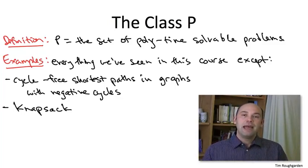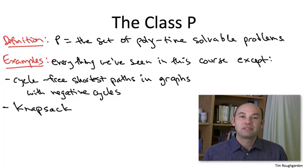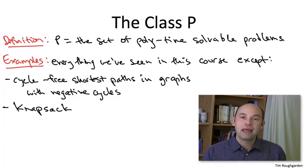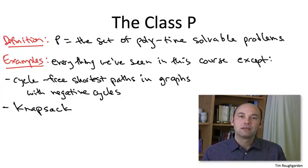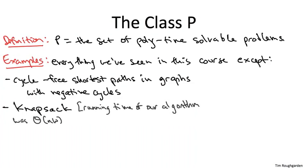So in the knapsack problem, the input is n items that have values and sizes. And also you're given this knapsack capacity, which is a positive integer capital W. And our table, our two-dimensional array, had theta of n times capital W subproblems. We spent constant time filling in each entry. So the running time of our dynamic programming algorithm was theta of n, the number of items, times capital W, the knapsack capacity.